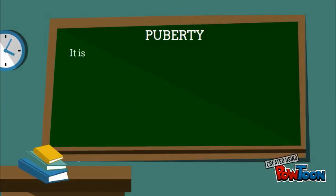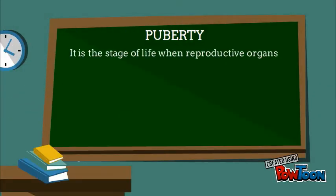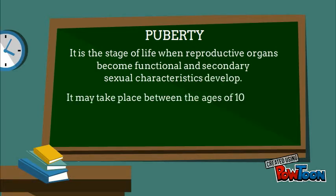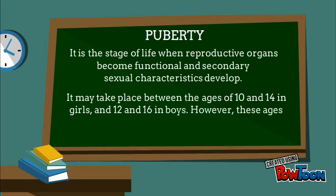Puberty. It is the stage of life when reproductive organs become functional and secondary sexual characteristics develop. It may take place between the ages of 10 and 14 in girls and 12 and 16 in boys. However, these ages differ from person to person.